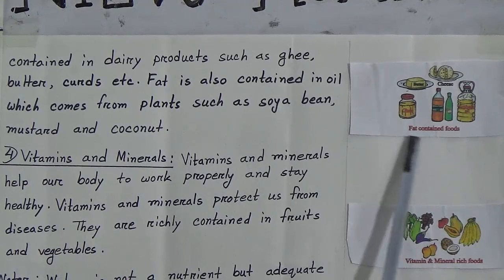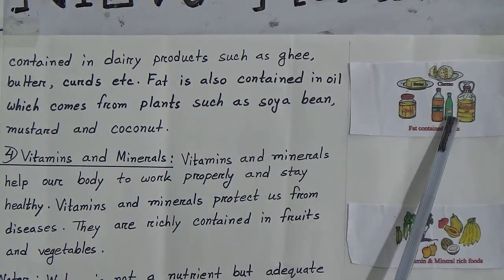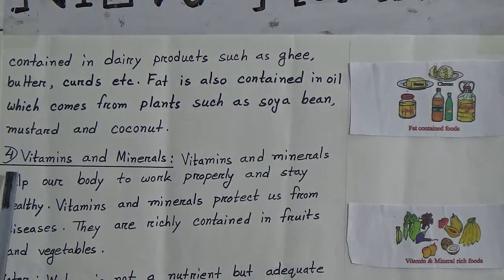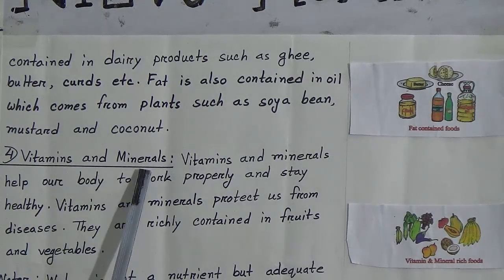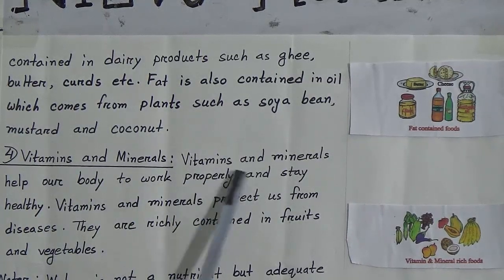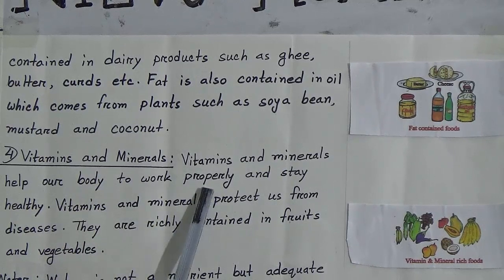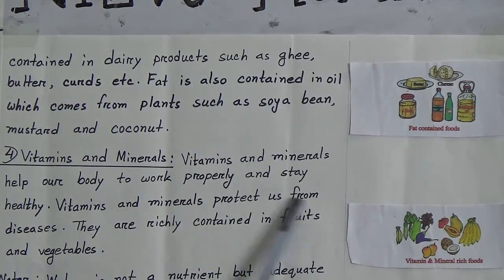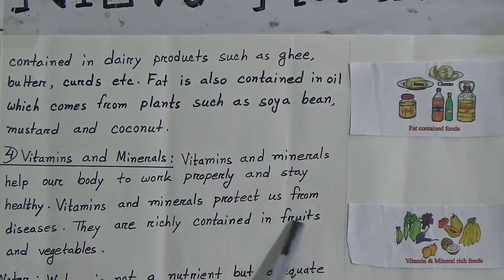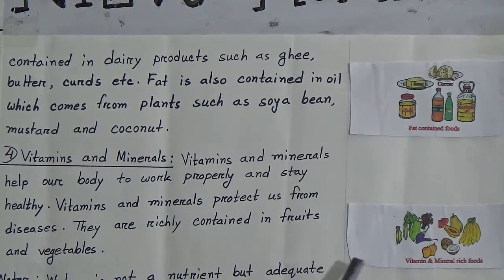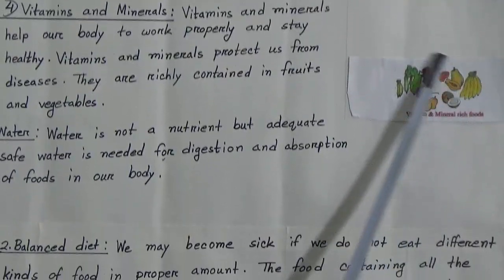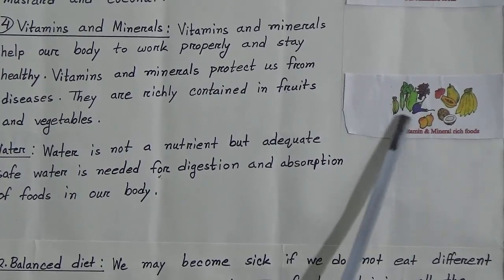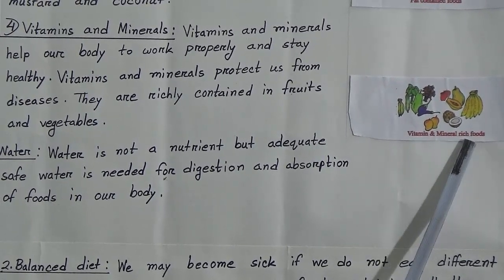Number four is vitamins and minerals. Vitamins and minerals help our body to work properly and stay healthy. Vitamins and minerals protect us from diseases. They are richly contained in fruits and vegetables. You can see in the picture here — some vegetables and fruits — these are all vitamin and mineral rich foods.